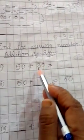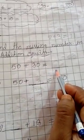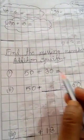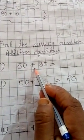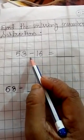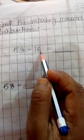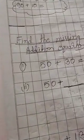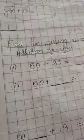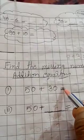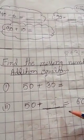For example, 50 plus 30 is equal to what — this is an addition equation because it is related to an addition problem. And here, since it involves subtraction, it is a subtraction equation. So an equation is a statement that has two equal sides — left hand side and right hand side — separated by an equal sign.